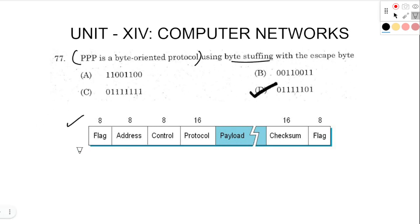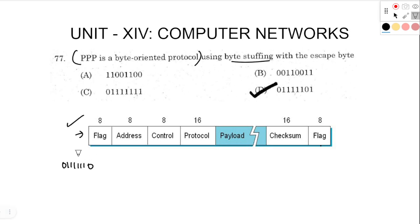Let's look at the frame format. Frame format is called byte stuffing. This is a flag — frame format of Point-to-Point Protocol. Flag means start of the frame, and end of the frame. In 8 bits, 0 will start, then 6 ones will start — that is 8 bits. This is the end flag: 0 followed by 6 ones.